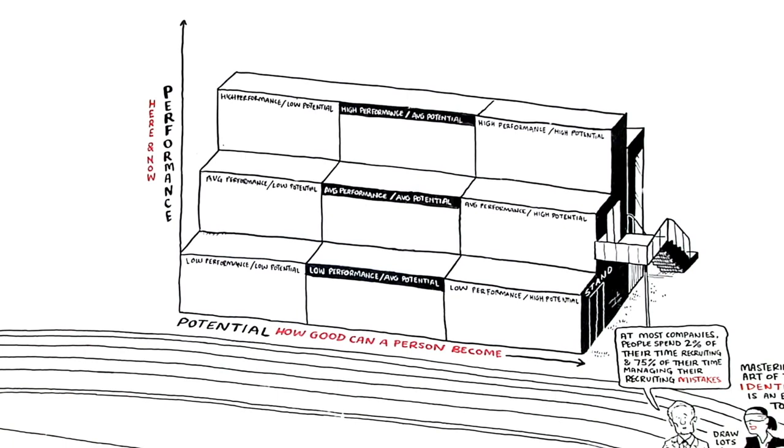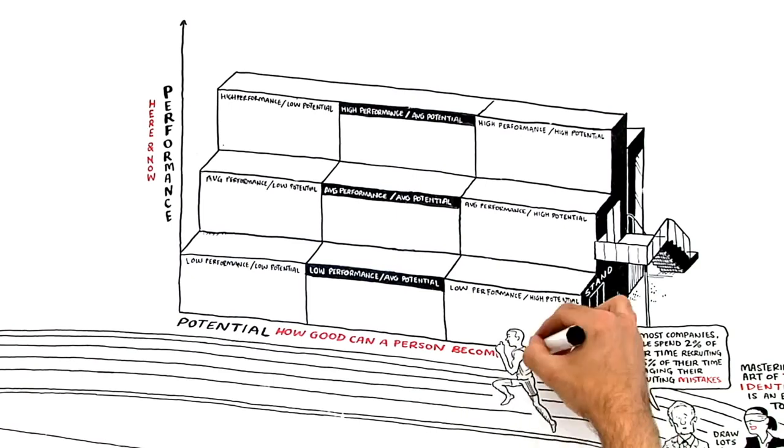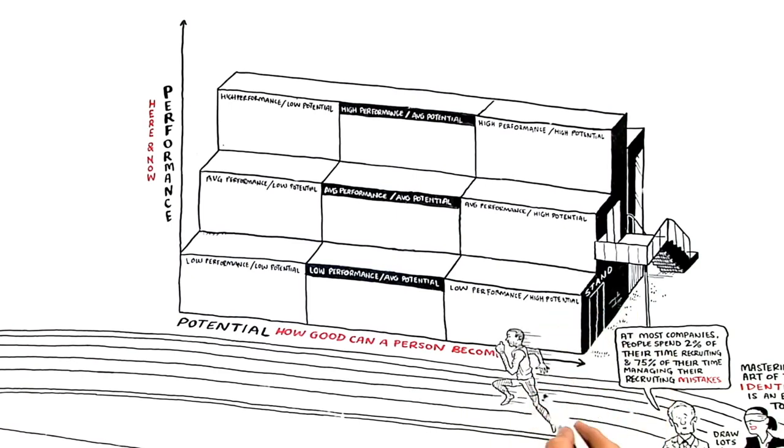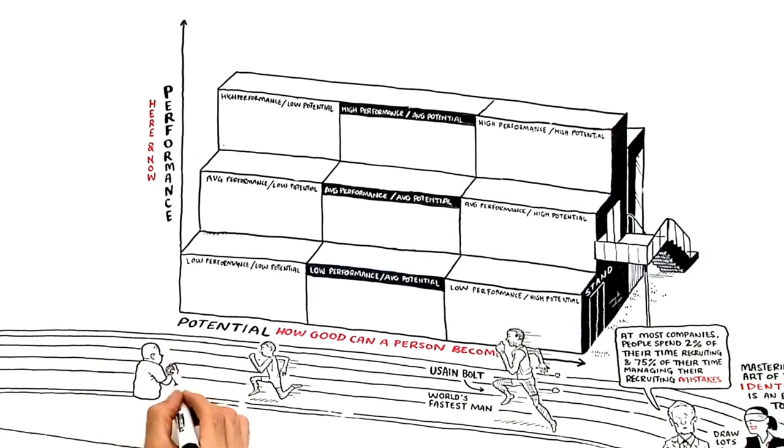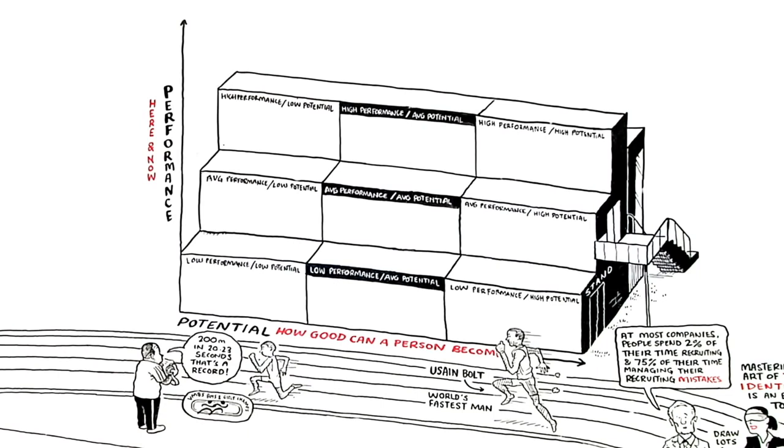Let me give you an example. Usain Bolt, the fastest man on the planet and the guy who ended up beating Asafa Powell's world record. Bolt is one of those people who was spectacular even in childhood. Already at the age of 13 he was predicted to be the man who would set new standards in the sprint distances.